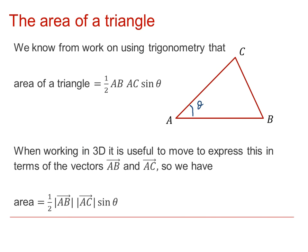Now this can be expressed in terms of the vectors AB and AC and that becomes particularly useful if we're working in three dimensions. So we can say that the area is a half the length of the vector from A to B multiplied by the length of the vector from A to C and then sine of the angle between them, as in this expression here.